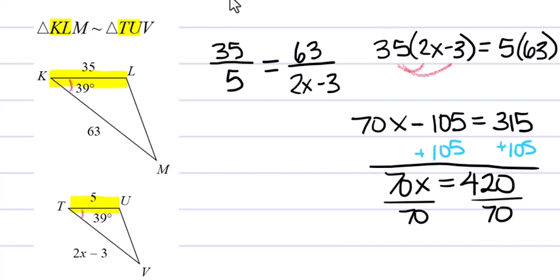Then we're going to divide both sides by 70, and we're going to get X equals 6, because 7 goes into 42 six times. So X equals 6.